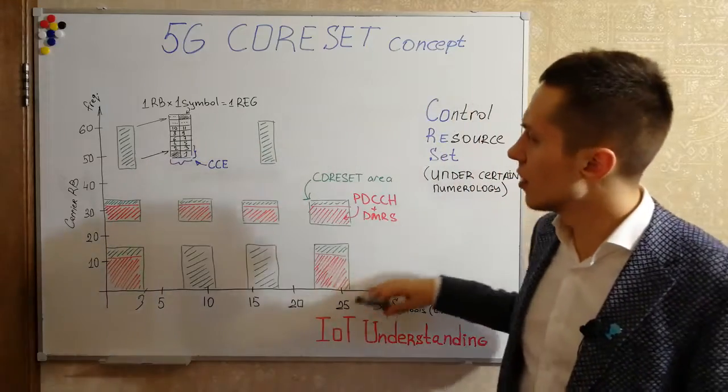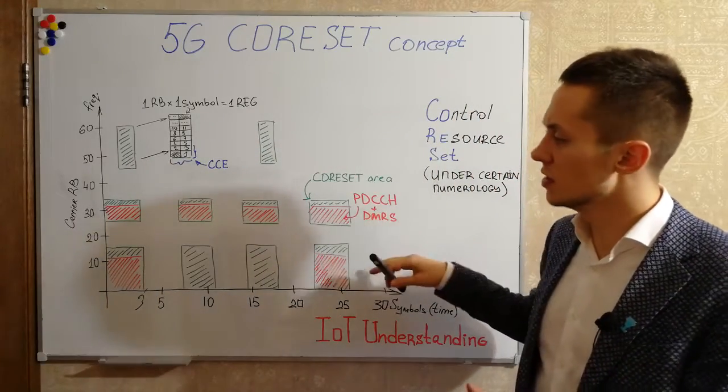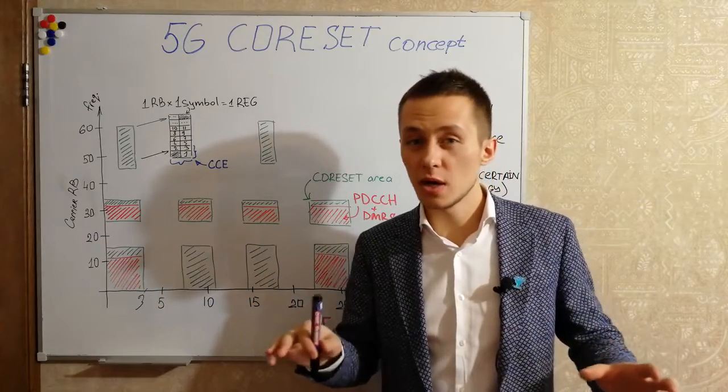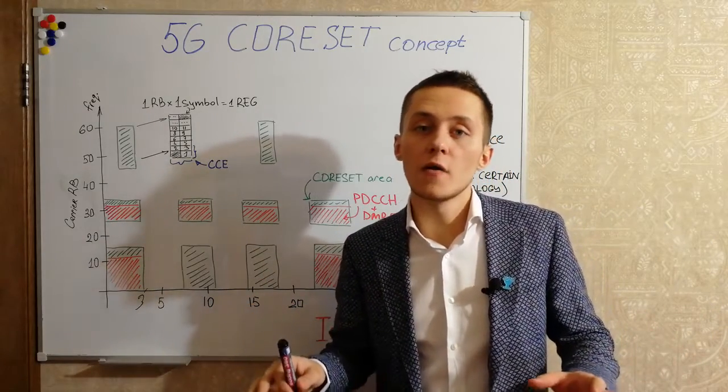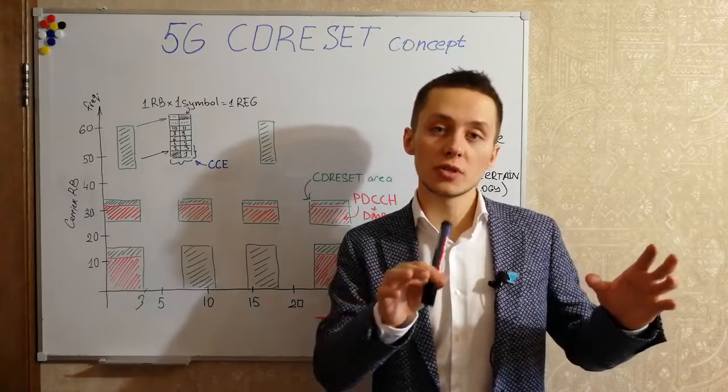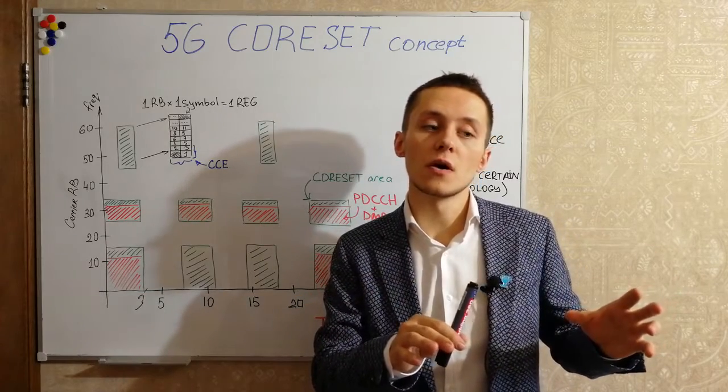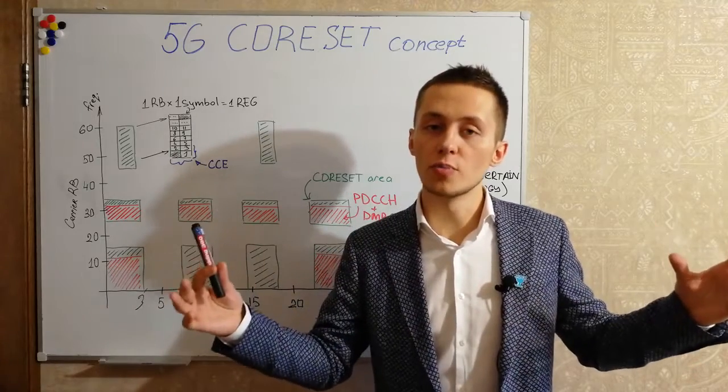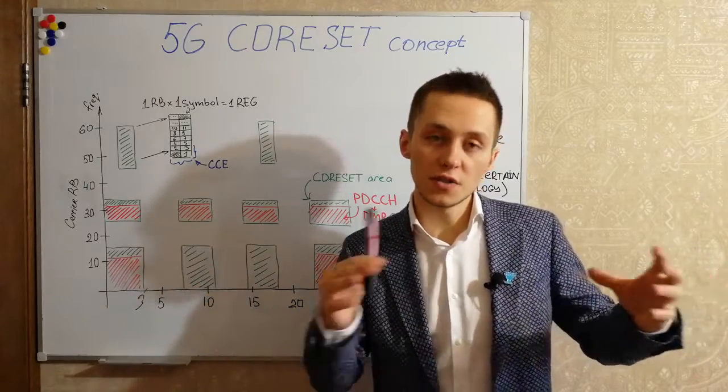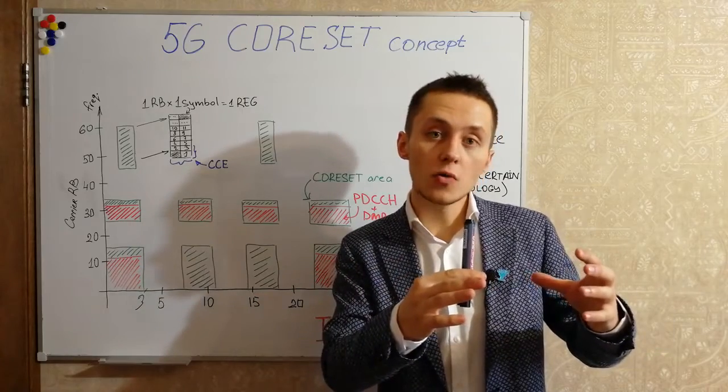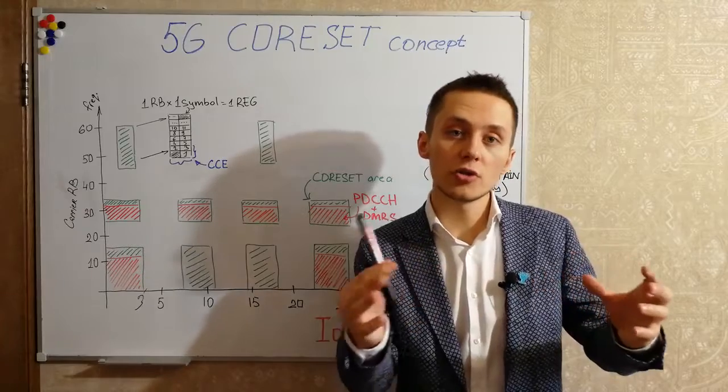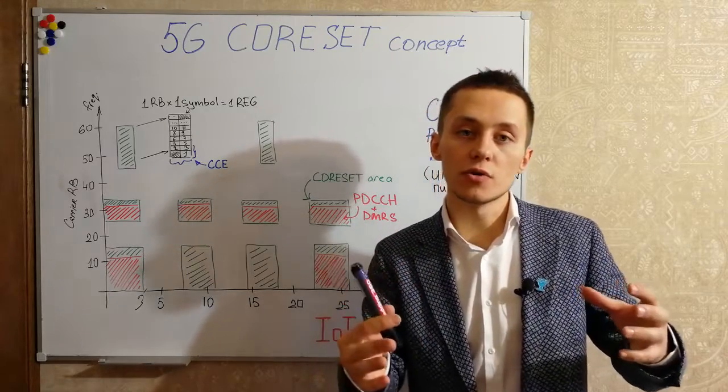And apart from this, we can have a kind of a combined cell. For example, a microcell with millimeter waves with high throughput potential. This microcell may have only PDSCH, only shared channel for user information.